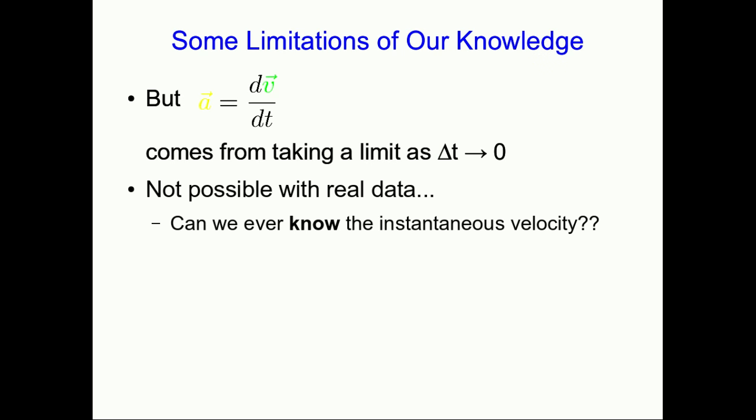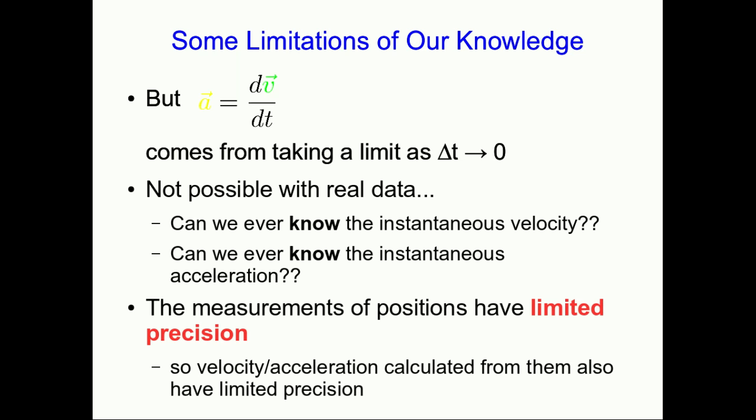And similarly, the acceleration comes from the velocity data the same way, and so you can ask the same question about acceleration. Well, back up. All of this is coming from data you have on position. And that data is measurements, and so it has limited precision. So everything we measure has a limited precision. All that's going on here is that velocity and acceleration are additionally limited by the fact that we can only let delta t get so small.